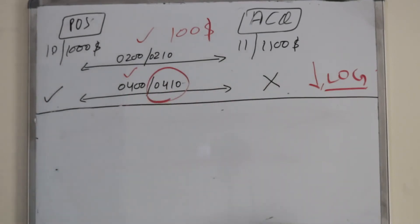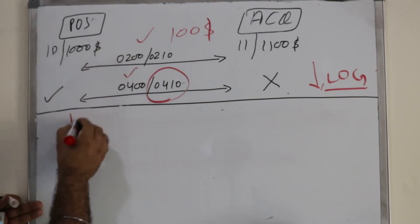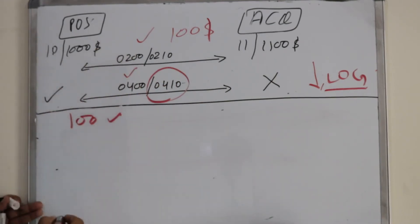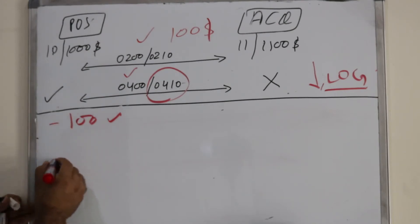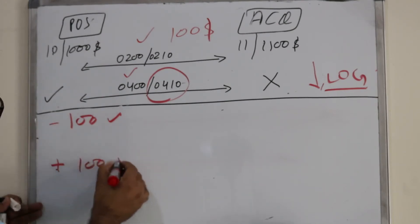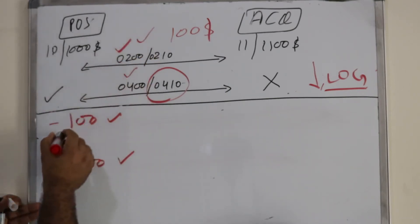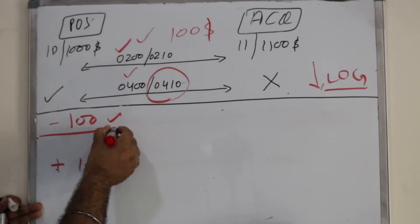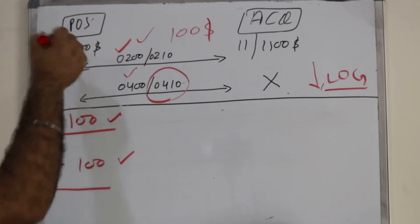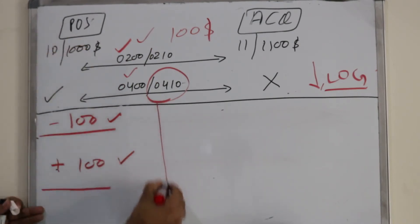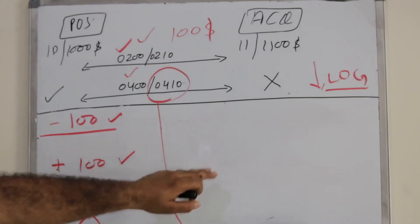The original $100 transaction was successful. When this transaction was sent, the customer was debited $100. When the POS device received the reversal response, they credited back $100 at the POS level, nullifying the transaction.